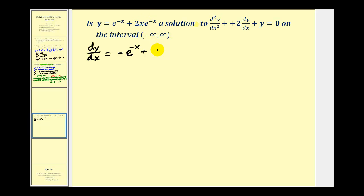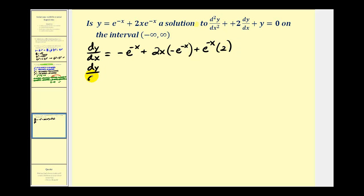The derivative of e to the negative x is e to the negative x times the derivative of negative x, giving negative e to the negative x. Plus, to find the derivative of 2x·e to the negative x, we apply the product rule and chain rule: the first function 2x times the derivative of the second, which is negative e to the negative x, plus e to the negative x times the derivative of 2x, which is two. Simplifying, dy/dx equals e to the negative x minus 2x·e to the negative x.